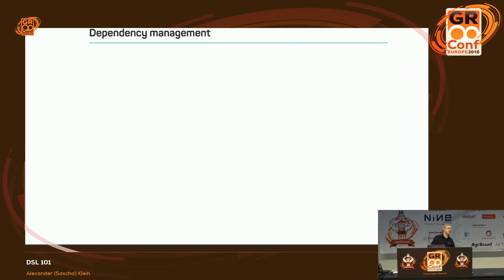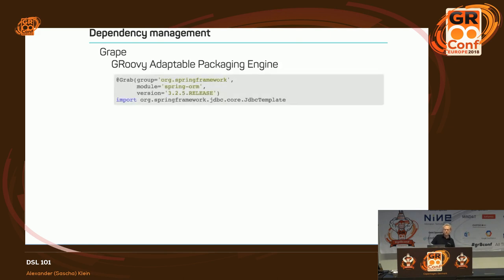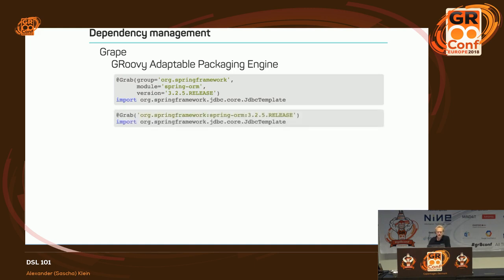Another thing to handle is dependency management. Normally you don't want DSL users adding external libraries. Grape — the Groovy Adaptable Packaging Engine — handles dependency management and is itself just an AST transformation, so you can simply add it with the AST transformation customizer to the compiler customizers.